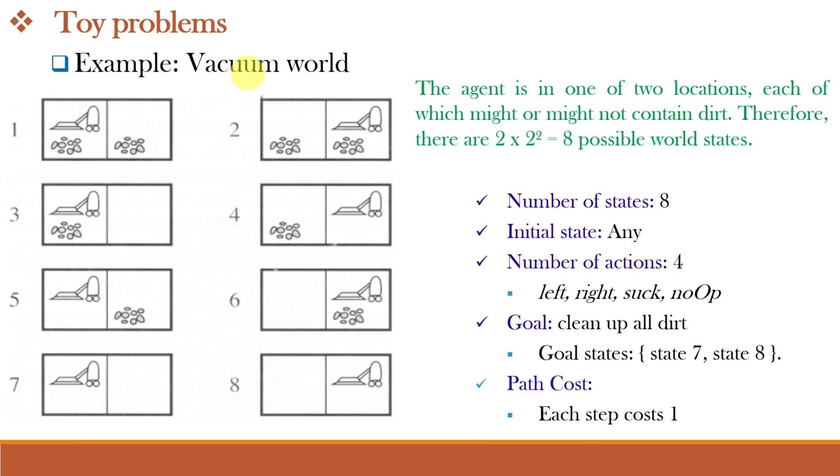Let us go ahead and understand the vacuum world problem. The vacuum world problem is a toy problem and involves only discrete locations, discrete dirt, etc. And therefore, this problem is categorized as a toy problem. Because the locations are fixed and the dirt is also fixed.